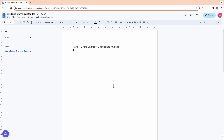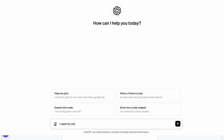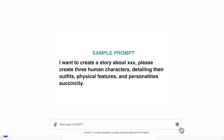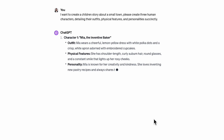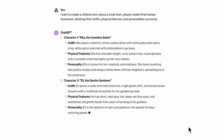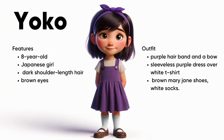Setting up your character design and art style is the most important step when creating this GPT bot. You can ask ChatGPT for suggestions, but I have my own character designs for my new storybook. My first character is Yoko — she is an 8-year-old Japanese girl with dark shoulder-length hair and brown eyes. You want to set the age because otherwise it would probably give you a full-grown woman when generating the image. For the outfit, I have a purple hairband, a bold sleeveless purple dress over a white t-shirt, and brown Mary Jane shoes with white socks. I specify very specifically how she should look in terms of outfit to make her as distinct as possible.